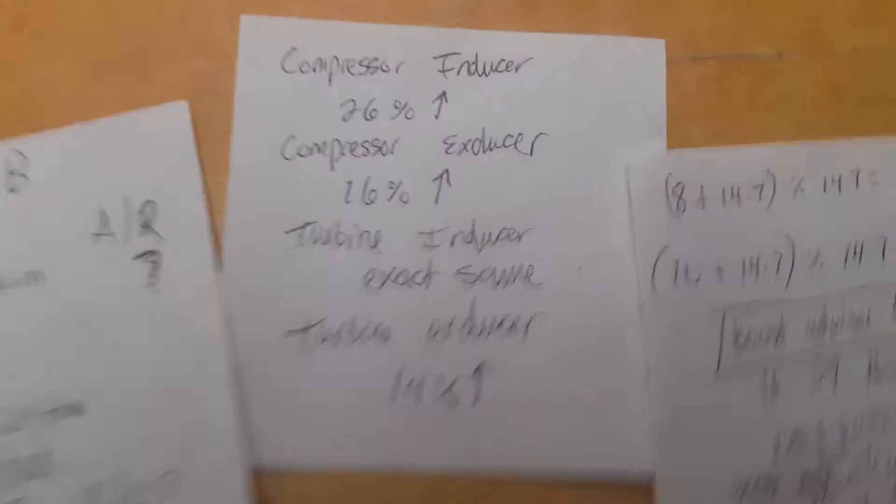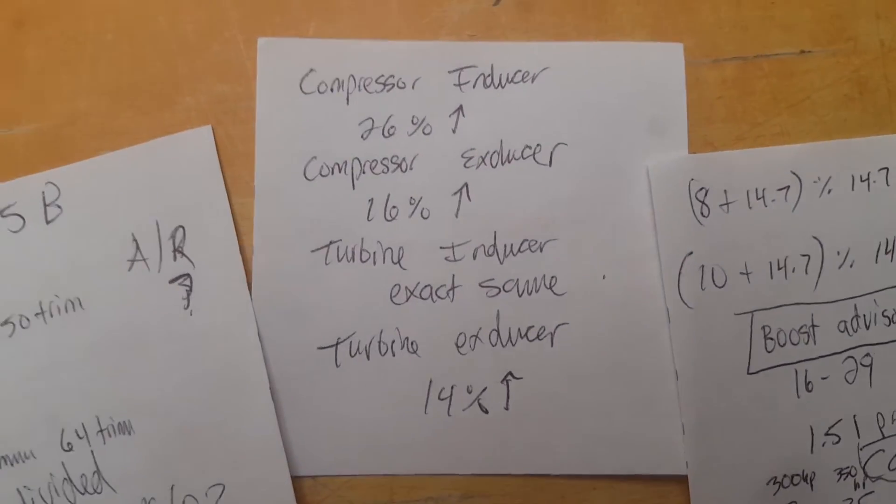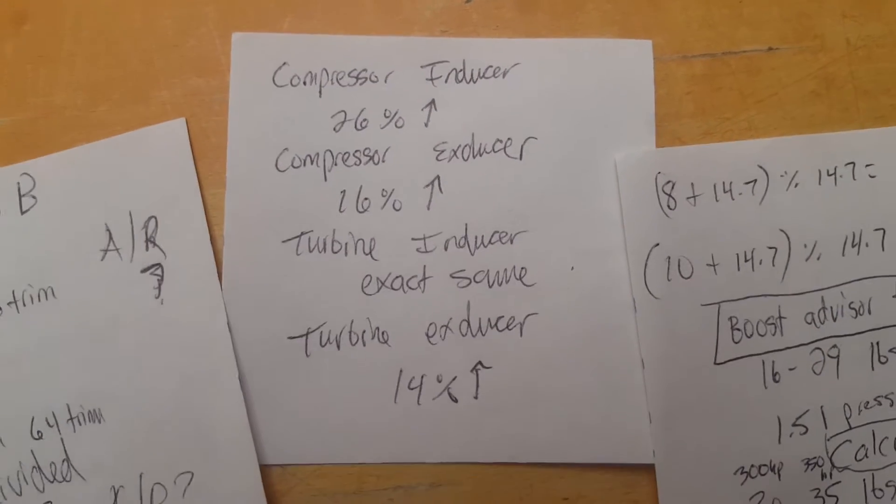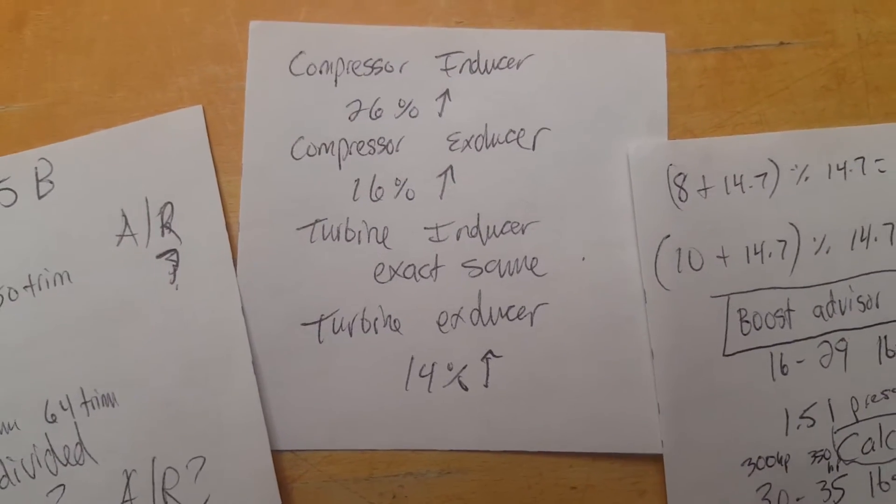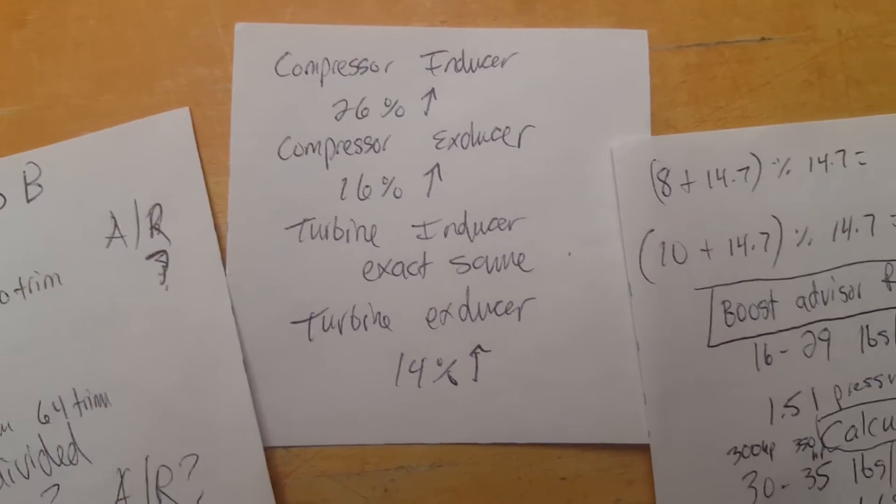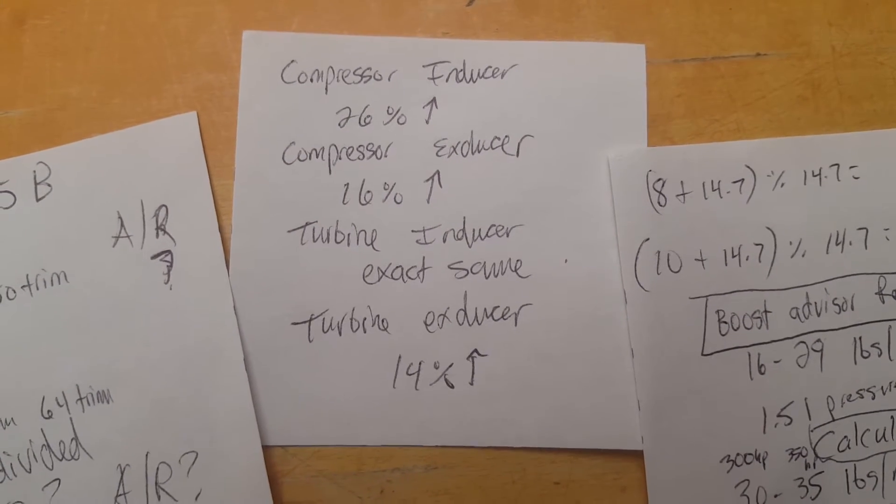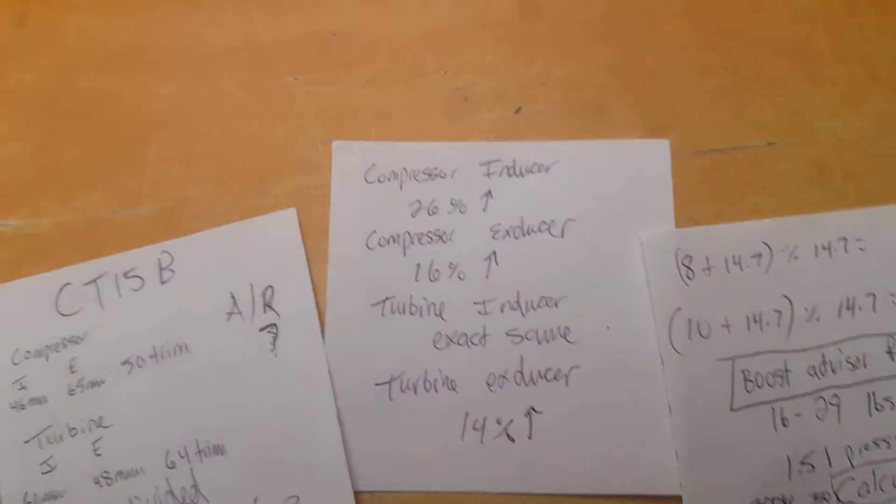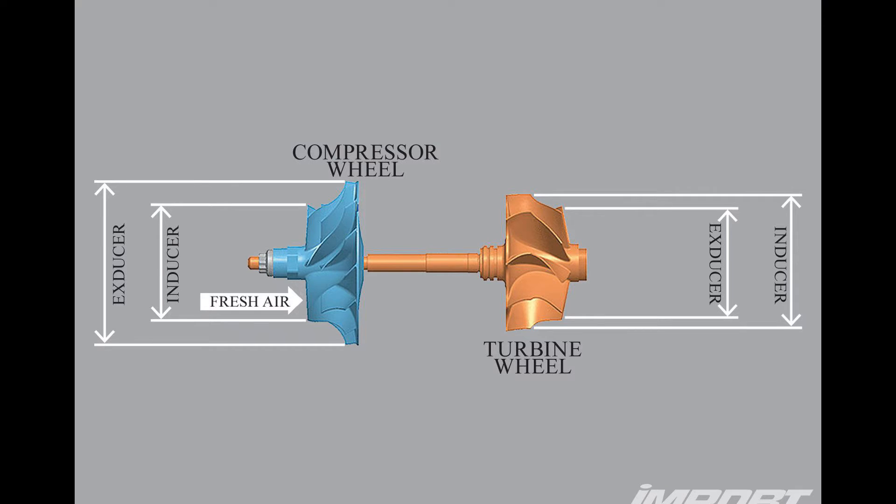So if you look, 58 trim versus 50 trim, 84 trim versus 64 trim. So I kind of calculated all of that stuff and did a comparison of percentage larger for the GTX versus the CT15B. So compressor inducer is 26% larger. The ex-ducer is 16% larger. The inducer is the exact same size. And the ex-ducer for the turbine is 14% larger. And here's a picture of what that means, inducer, ex-ducer, turbine, and compressor. Basically, just kind of the size of the wheel.